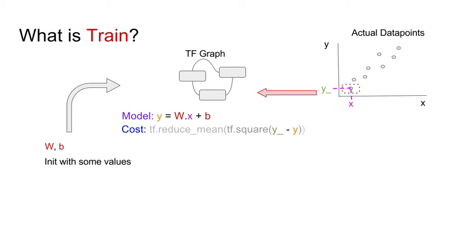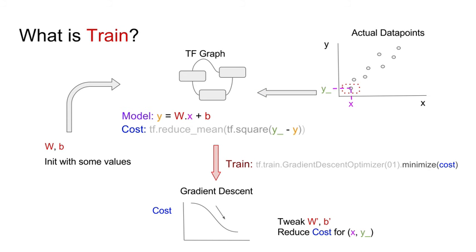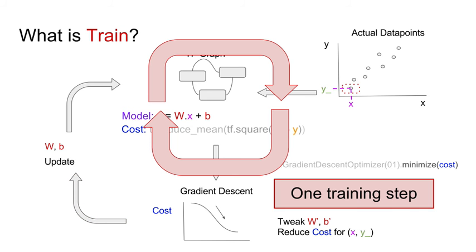Now we have values for w and b as well as an x, which enables us to make a prediction y. We also have the actual value y_underscore, and we can calculate the cost — the absolute difference between the actual value y_underscore minus the prediction y. With the cost, we can do training via gradient descent to minimize it. We tweak w and b to reduce the cost from the viewpoint of this data point, update them, and this is exactly one training step.